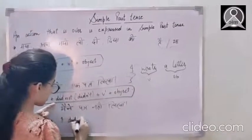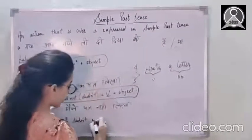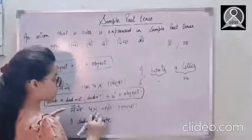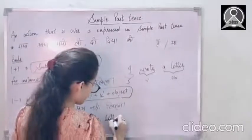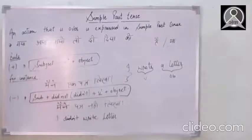So I didn't. Verb's first form, not second. I didn't write. Then object. An object is patr only. So I didn't write letter. Full stop. I didn't write letter.